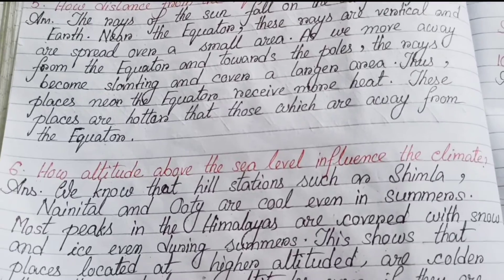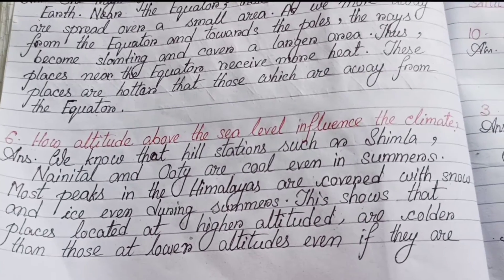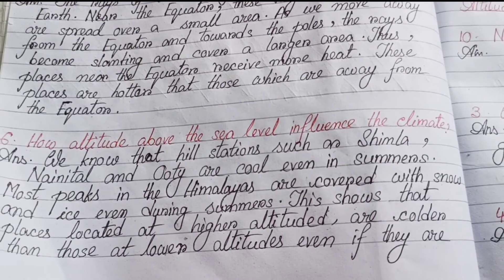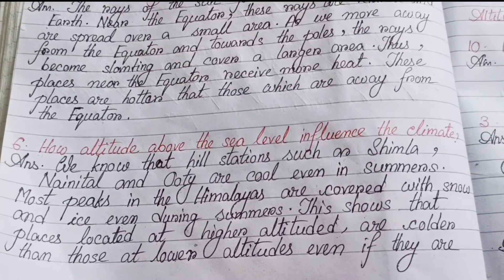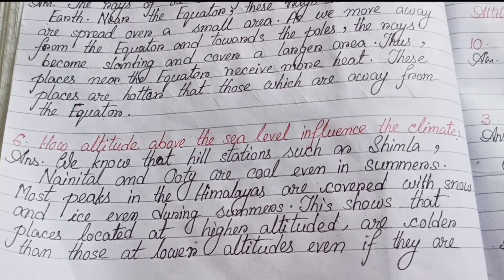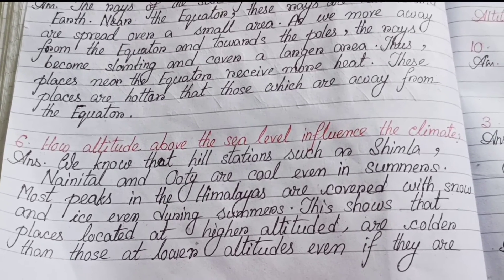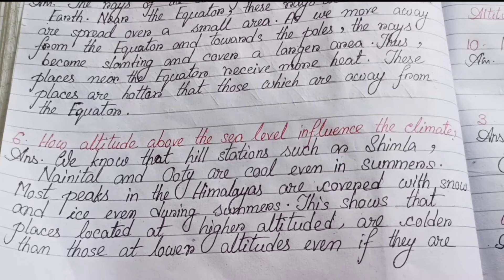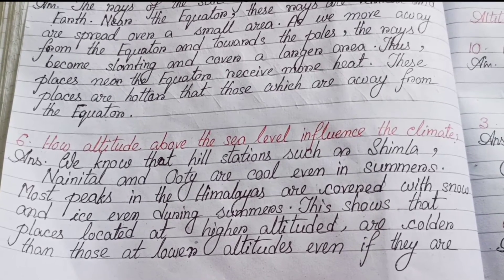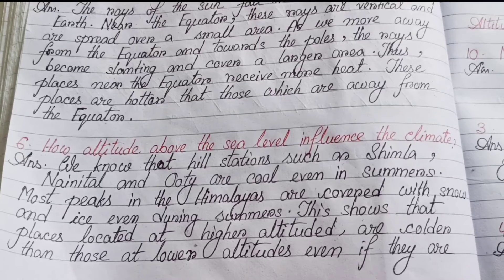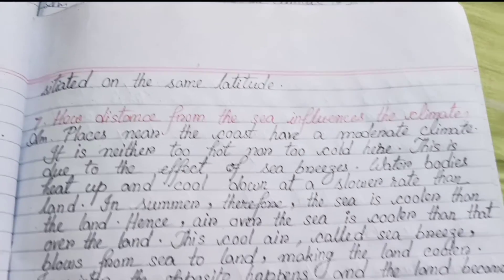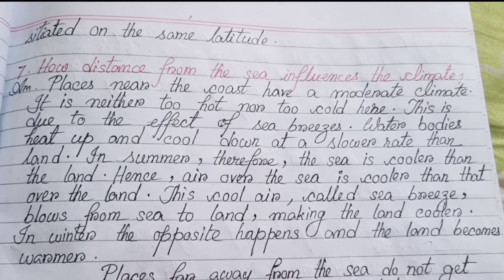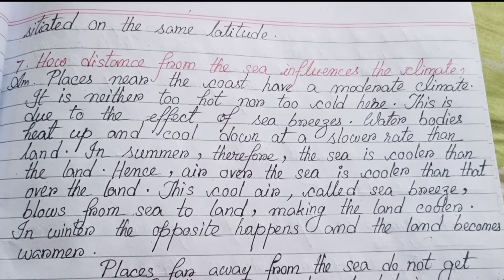Number six: How does altitude above sea level influence the climate? We know that hill stations such as Shimla, Nainital, and Ooty are cool even in summers. Most peaks in the Himalayas are covered with snow and ice even during summers. This shows that places located at higher altitudes are colder than those at lower altitudes, even if they are situated on the same latitude.